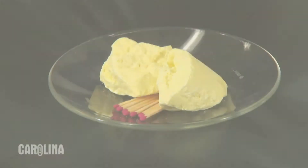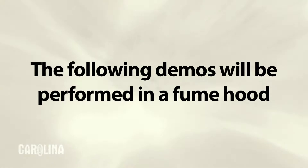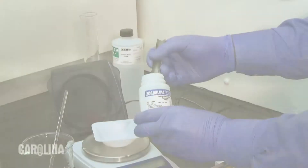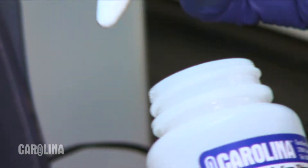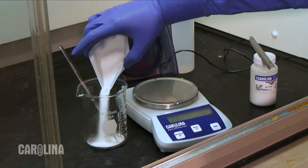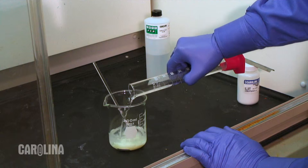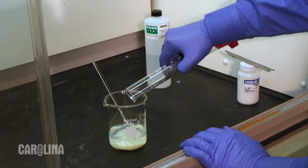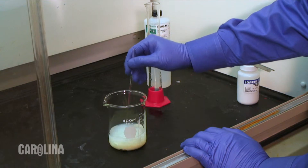The second element we will isolate is sulfur. Sulfur is commonly used in fertilizers, gunpowder, and matches. This demonstration, along with the final one, will be performed in a fume hood. To isolate sulfur, begin with anhydrous sodium thiosulfate. Place 25 grams of sodium thiosulfate in a 400 milliliter beaker. Add 100 milliliters of 0.5 molar sulfuric acid and stir the mixture with a glass stirring rod. The solution will become a milky white suspension, which over time reveals a yellow powder elemental sulfur.